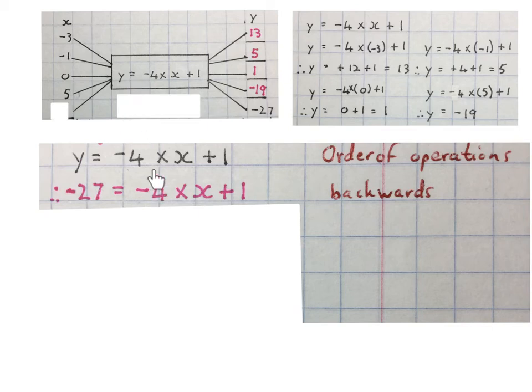Keep the minus four. Keep the times X. Keep the plus one. Now we want to get the X alone. Again there's a few ways of doing it. You can for instance use inspection and say minus four times what, plus one, will give me minus twenty-seven. A lot of kids can do that. But we're going to use another method.